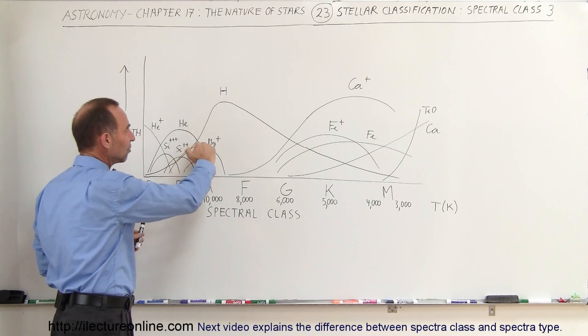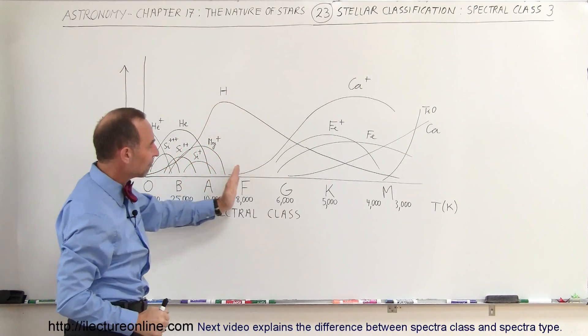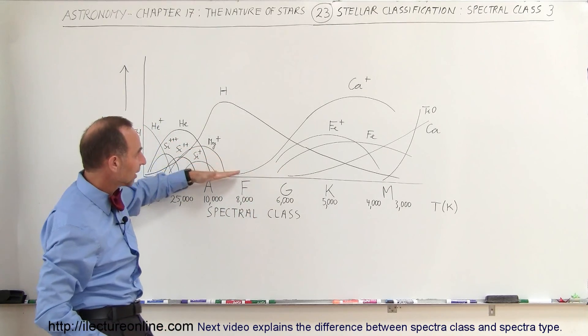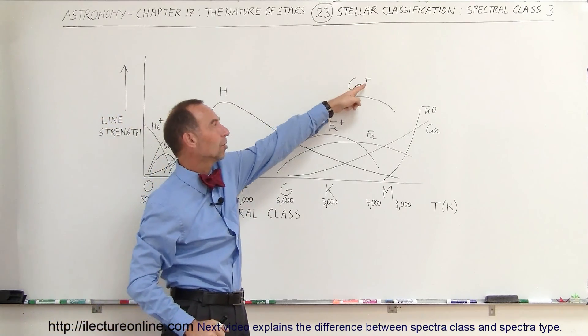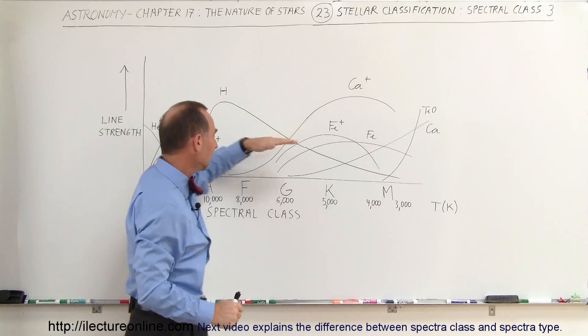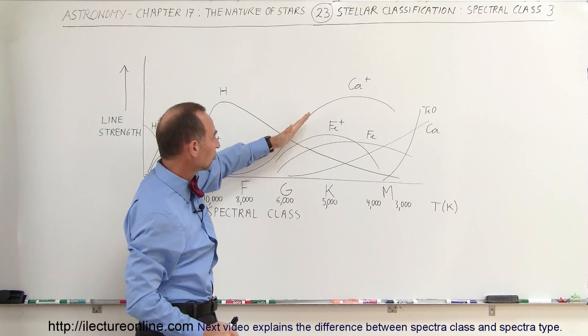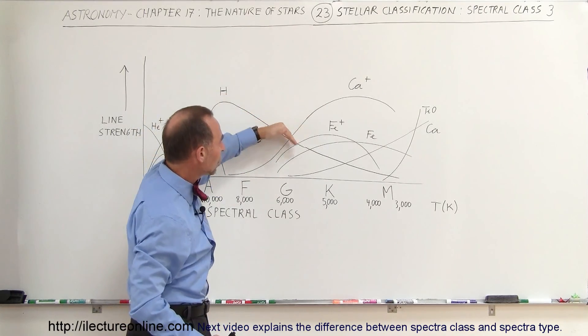The magnesium lines reach a peak and then become weaker. If we go further, the F and G-class stars, notice that the calcium plus one line, where we have one electron missing, starts getting stronger, stronger, stronger, as the hydrogen lines become weaker.